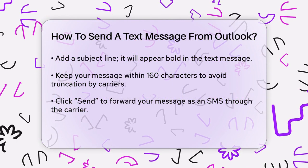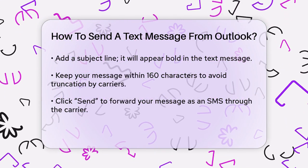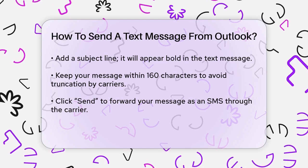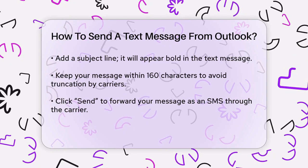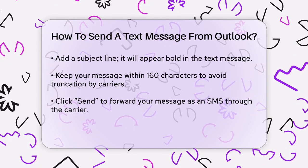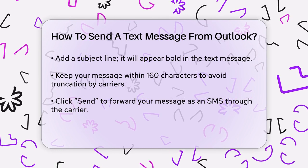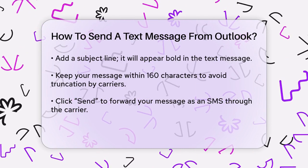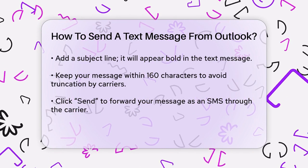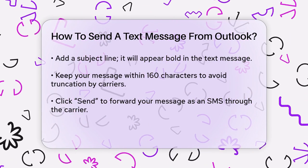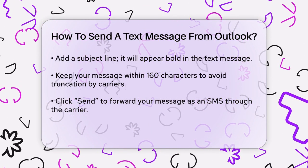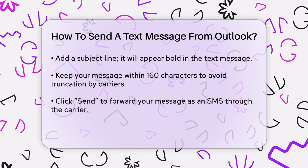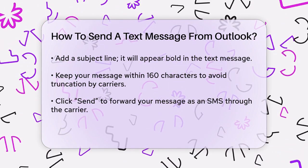The message will be sent to the carrier, which will then forward it as an SMS to the recipient's phone number. To make this process easier, you can set up a contact in Outlook specifically for texting. Go to the Contacts option, click on New Contact, and enter a unique name such as John Doe Text. Then enter the contact's text address and save it. This way, you can simply type the contact name in the To field whenever you want to send a text.